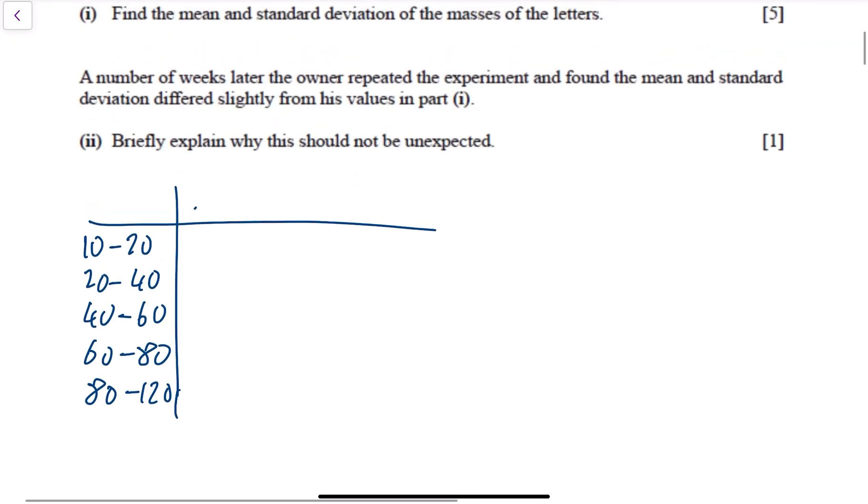And so your midpoint x: to get the midpoint you add 10 and 20 and divide by 2, that's 15. 20 and 40 divided by 2 gives 30, 40 and 60 gives 50, 60 and 80 gives 70, and 80 and 120 divided by 2 gives 100.